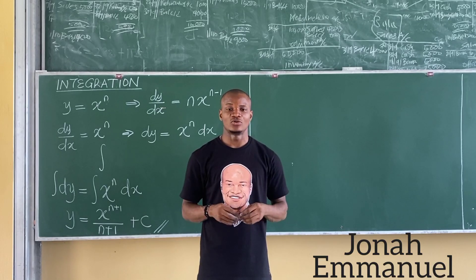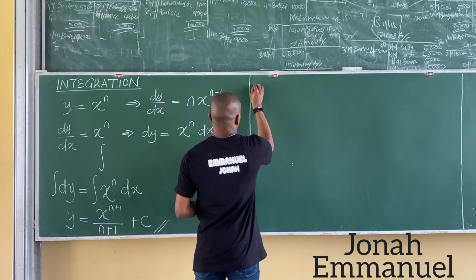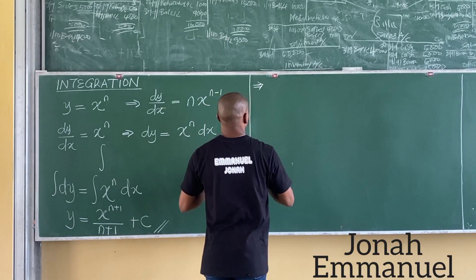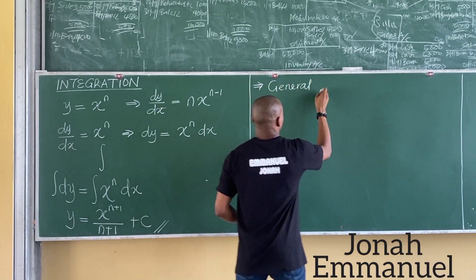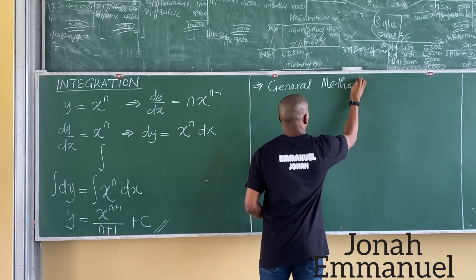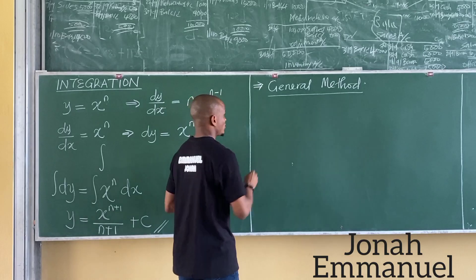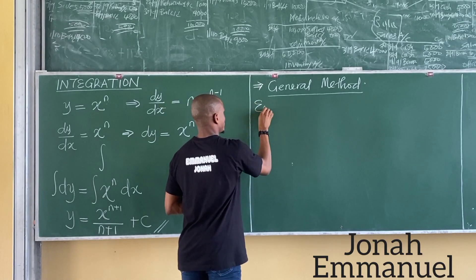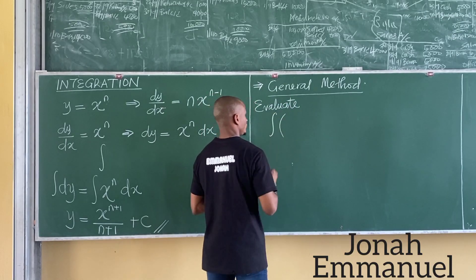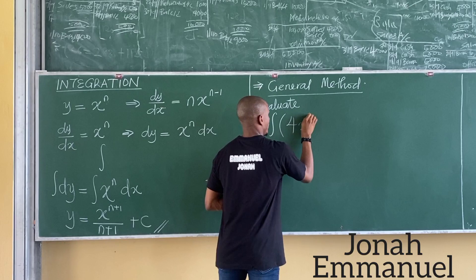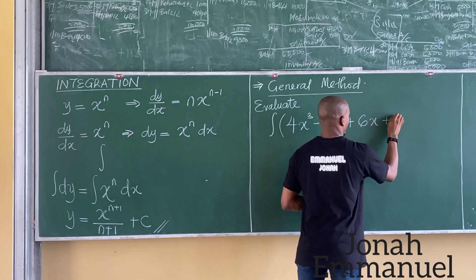Let's start with the first method of integration, known as integration via the general method. We have to evaluate the integral of 4x cubed minus 2x squared plus 6x plus 7.